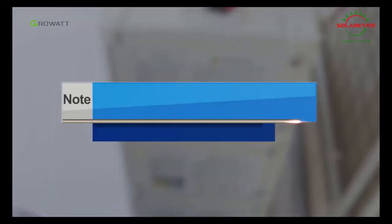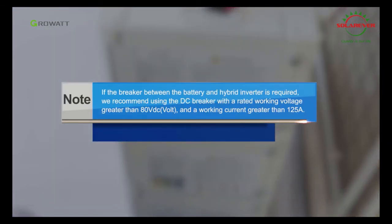Notice: if a breaker between the battery and hybrid inverter is required, we recommend using a DC breaker with a rated working voltage greater than 80 volts and a working current greater than 125 ampere.